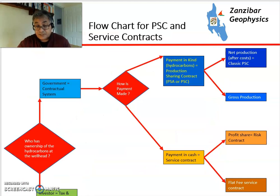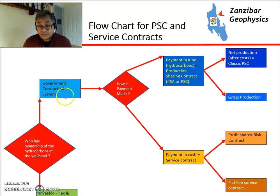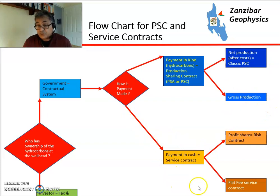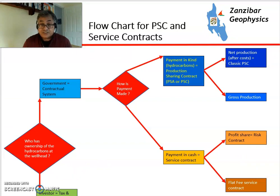To sum up: there's a simple diagram. At the wellhead, if you own the hydrocarbons, it's a tax and royalty system. If the government owns them, it's a contractual system. If payment is in kind through hydrocarbons, it's a production sharing contract — either net production after costs or gross production depending on the PSC type. If paid in cash, it's a service contract — either a profit share risk contract or a flat service fee. This explains the different types of oil contracts you'll encounter. If you want to know more, consult an expert within your company or from an outside consultancy such as Rystad, Wood Mackenzie, or IHS, who can give you far better detail than a geologist like me. Thank you very much.